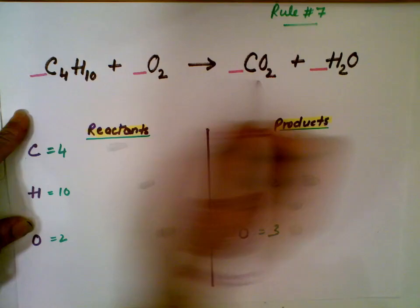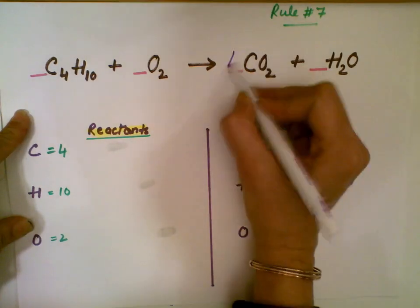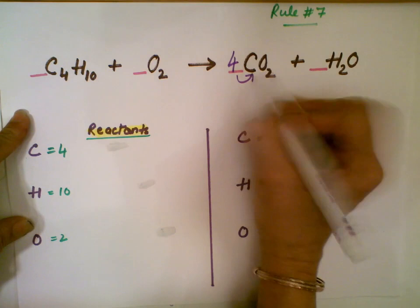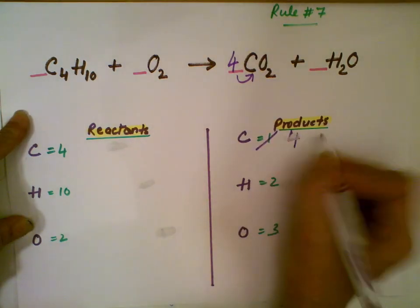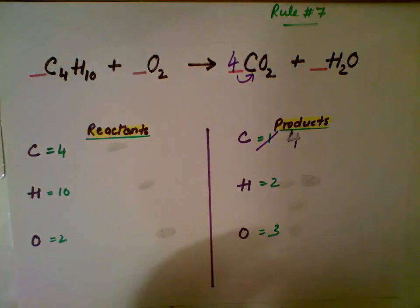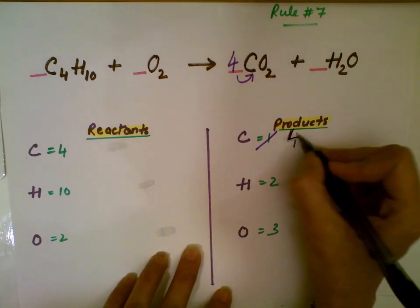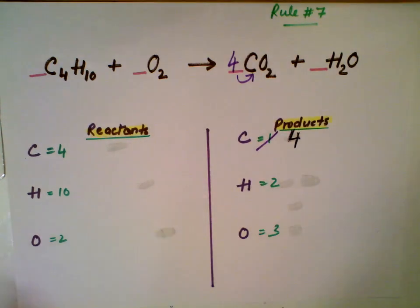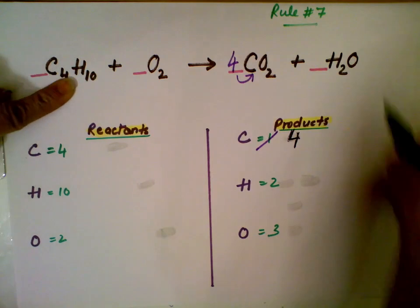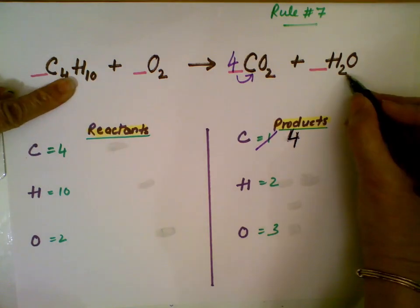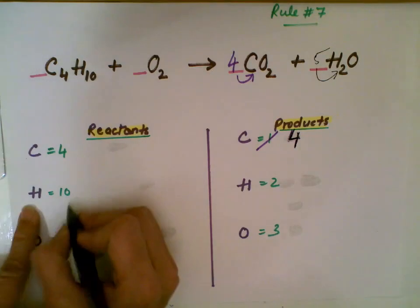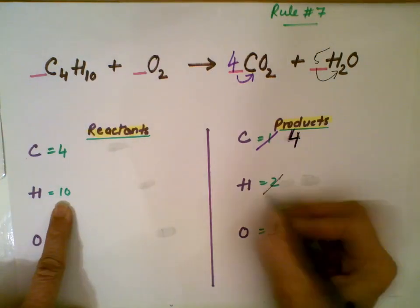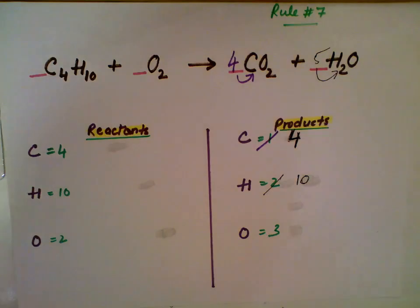This side has 4 carbon and this side has 1 carbon. So if I put 4 in front of CO2, this carbon becomes 4. Now let me balance hydrogen. Hydrogen on this side is 10, however hydrogen here is 2. How do I make this 10? If I put 5 in front of H2O, 5 times 2 is 10. So now both sides have 10 hydrogen.